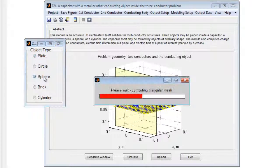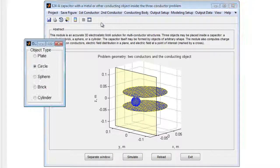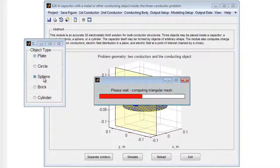To begin, run the module in MATLAB, and the default geometry is displayed. The type and parameters of the first and second conductors may be changed using the first and second conductor menus, respectively.